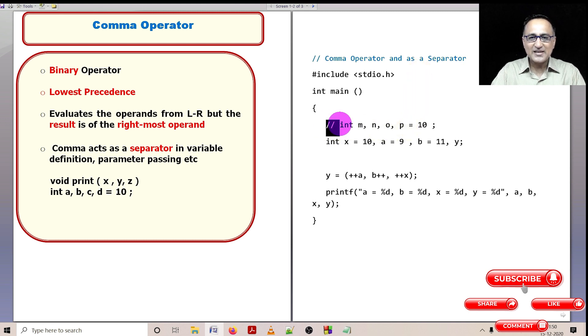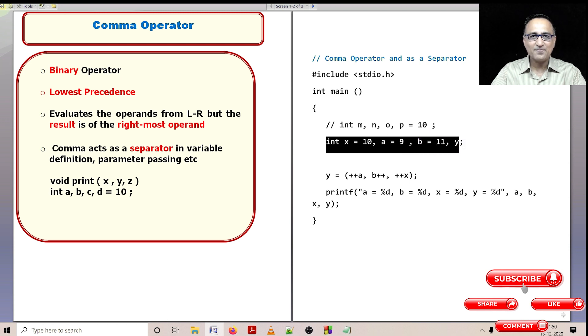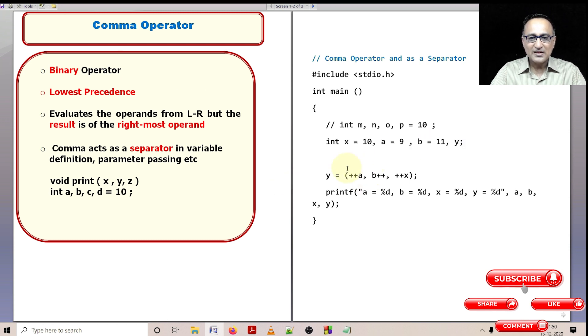So here in this first line, comma is shown as a separator: m, n, o, p is assigned the value 10. Now the next line, I have said x is 10, a is 9, b is 11, and y is not given any value. Now I have given y is assigned ++a, b++, ++x.